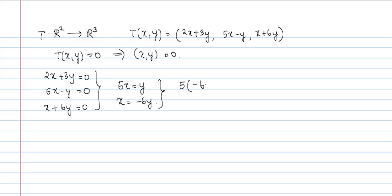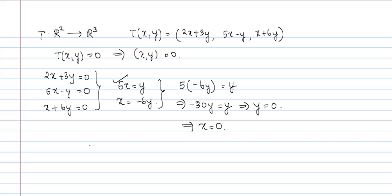Putting these together: 5 times minus 6y equals y, which means minus 30y equals y. This is possible only if y equal to 0. And since y equal to 0, substituting back gives x equal to 0. So T(x, y) equal to 0 gives us (x, y) equal to 0. Therefore, T is 1-to-1.